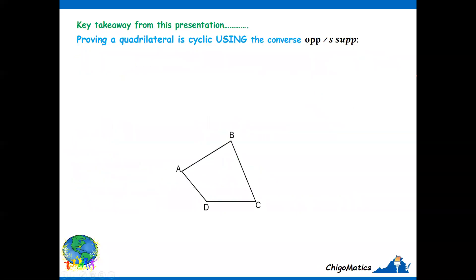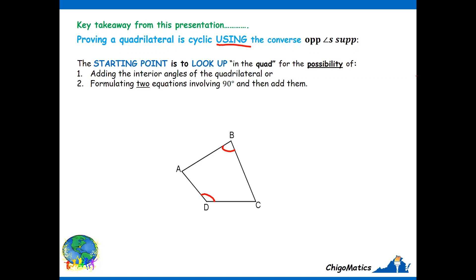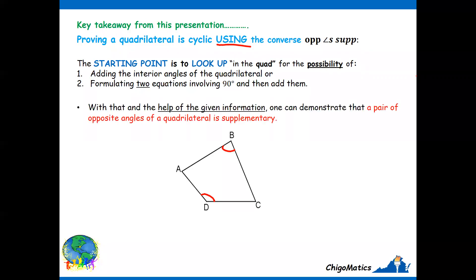Key takeaway from this presentation: proving a quadrilateral is cyclic using the converse of opposite angles supplementary. This is the diagram. If you could show this angle plus this angle is 180, then you are done. You can conclude that ABCD is cyclic. The starting point is to look up in the quad for the possibility of adding the interior angles of the quadrilateral, or formulating two equations involving 90 and then add them. With that and the help of the given information, one can demonstrate that a pair of opposite angles of a quadrilateral is supplemental.